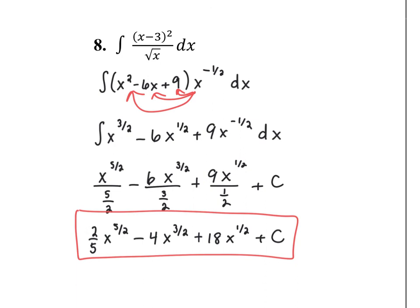A couple of reminders: make sure you only use the power rule when you have a power function — don't try to use it on a trig function, exponential, or logarithm. And don't forget your plus c — it shows up every time to represent the constant that could have been part of the original problem.